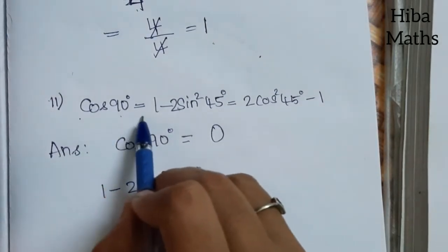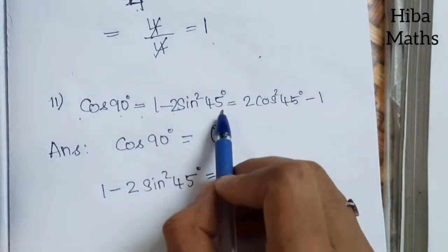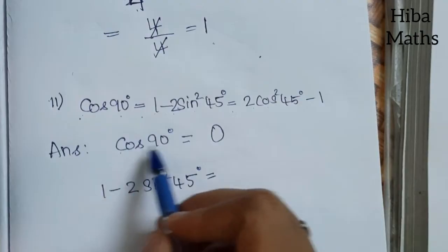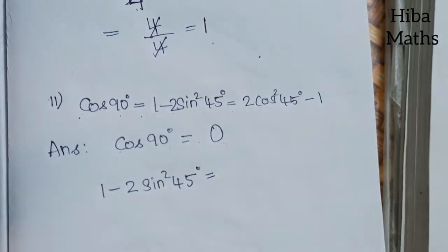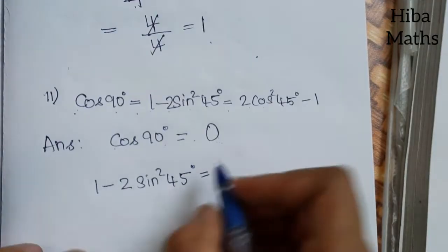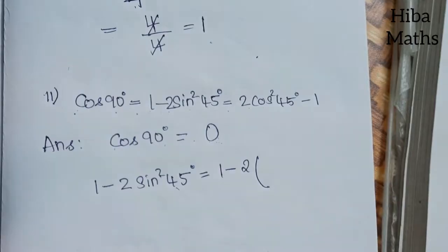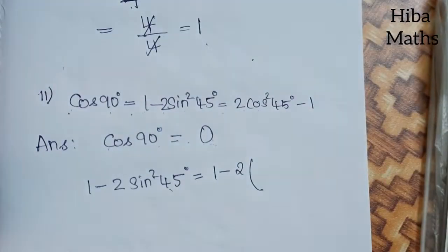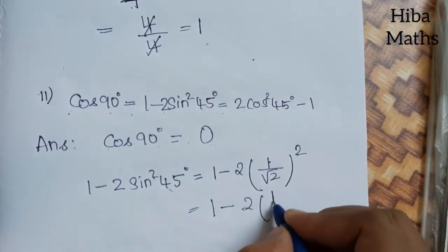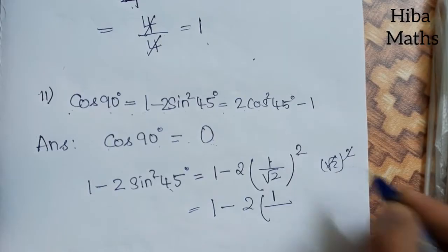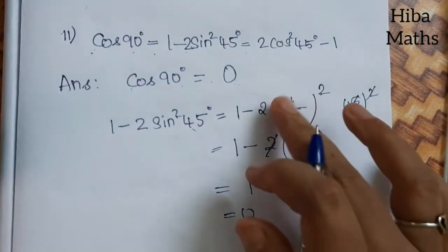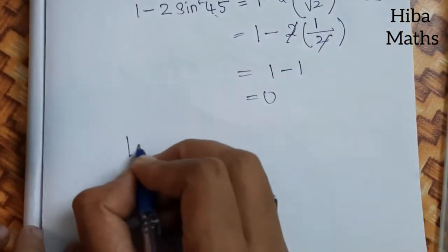2nd question: cos90° = 1 − 2sin²45° = 2cos²45° − 1. The value of cos90° = 0. From the table, cos90° = 0. Now for 1 − 2sin²45°: sin45° = 1/√2, so (1/√2)² = 1/2. Then 1 − 2×(1/2) = 1 − 1 = 0. The 2s cancel, giving 0. 2nd condition proved.